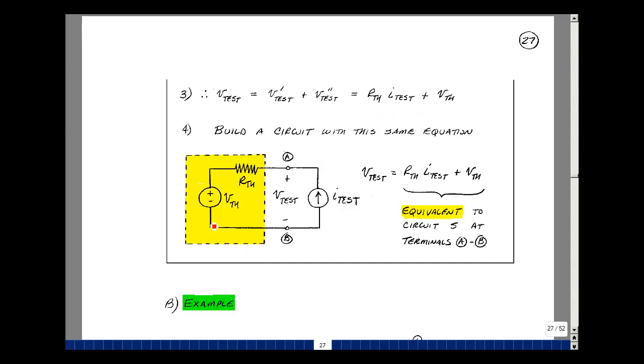The rise in voltage here would equal the drop of I_TEST times R Thevenin plus V Thevenin. It gives us the same equation as our test circuits were, and so it's therefore equivalent between terminals A and B.